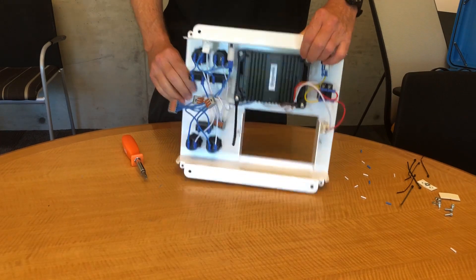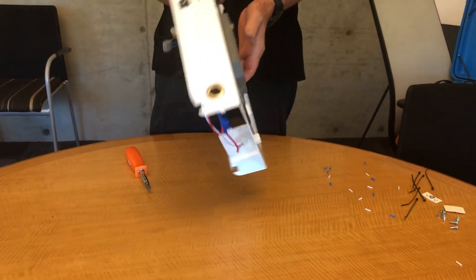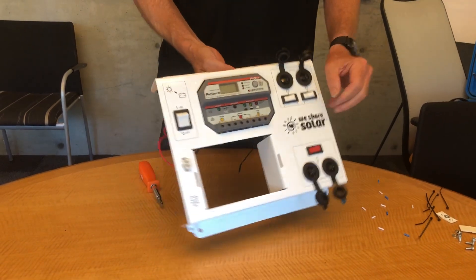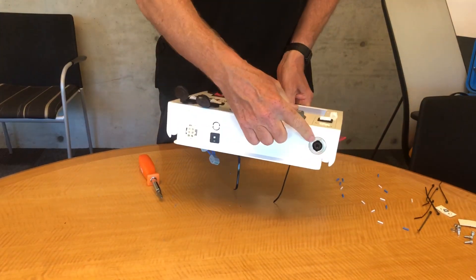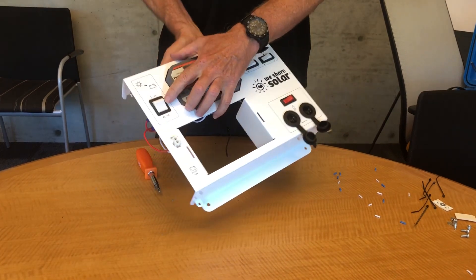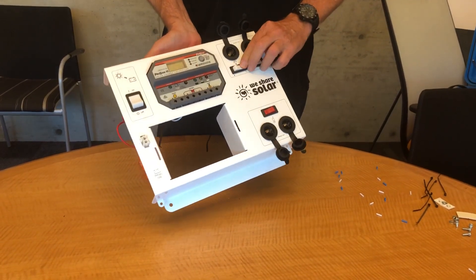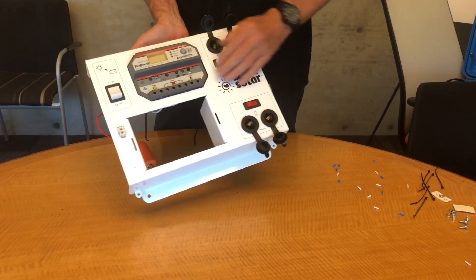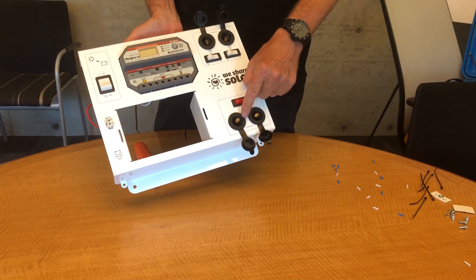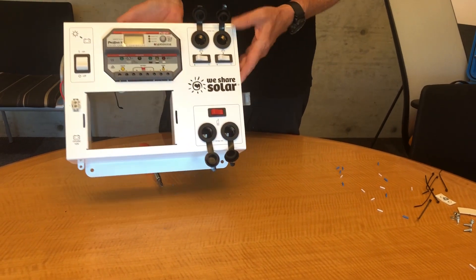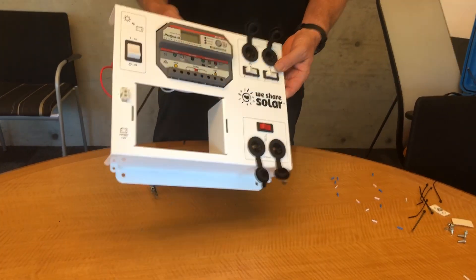And that, my dear friends and colleagues, is a completed solar suitcase. Socket oriented up. Switches oriented so that on is up or to the right. Screws tight. Sockets oriented facing upward with a little lettering this way. And you're good to go. Thank you.